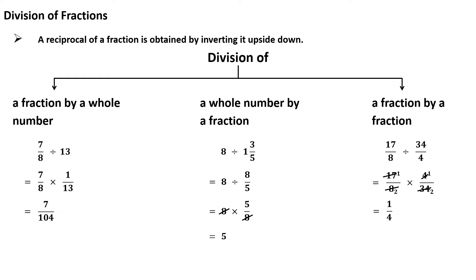The last one is division of a fraction by a fraction. While dividing one fraction by another, we multiply the first fraction by the reciprocal of the other. For example, 17 upon 8 divided by 34 upon 4 equals 17 upon 8 multiplied by 4 upon 34. Simplifying — 4 twos are 8, 17 twos are 34 — gives an answer of 1 upon 4.